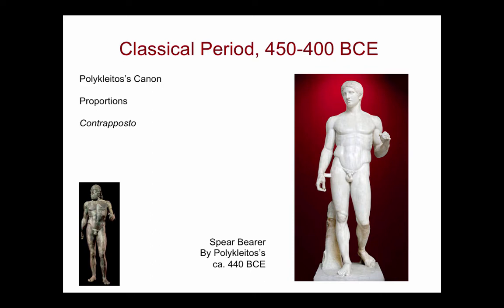Much of this Greek sculpture was made in bronze — they did carve marble, but they also cast bronze. Almost all the bronze examples are gone because over thousands of years they've been melted down for other uses like making cannonballs. But some were being shipped across the Aegean, and sometimes a ship sinks. When we find those ships, they sometimes contain sculpture — and those are the bronze works we have to this day.